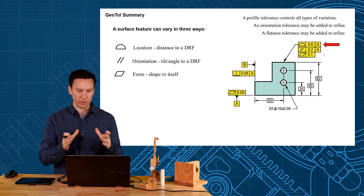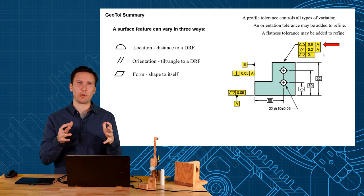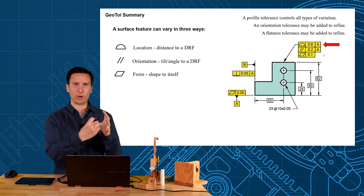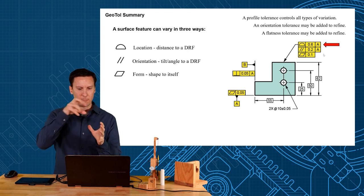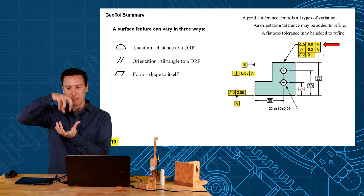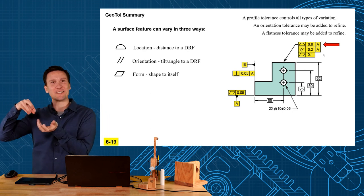I always thought to explain this I needed one of those Russian nesting dolls. Remember those? And we would have a Russian nesting doll the big one it would say location tolerance on it. And then I could pop off the head and be like oh there's orientation tolerance inside. And then I'd pop off the head and oh there's form tolerance inside of that.